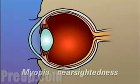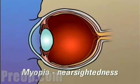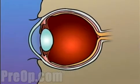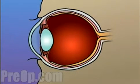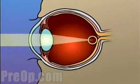Myopia, or nearsightedness, occurs when the shape of the eye is too long or the curve of the cornea is too extreme. In this case, light rays are focused on a point in front of the retina instead of on the retina itself.